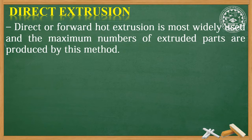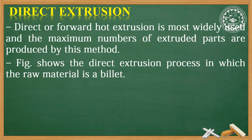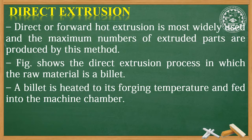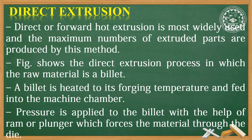Let us discuss direct extrusion, which is also known as forward hot extrusion. It is the most widely used method and the maximum number of extruded parts are produced by this method. In direct extrusion, the raw material is a billet. The billet is heated to its forging temperature and fed into the machine chamber.